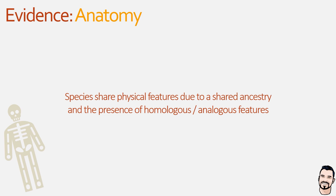Analogous features, on the other hand, are anatomical features that appear similar but have evolved via different mechanisms to fulfill a specific purpose, and therefore were not inherited from a common ancestor.